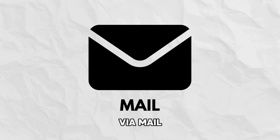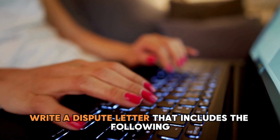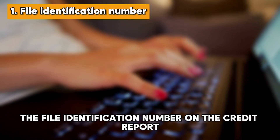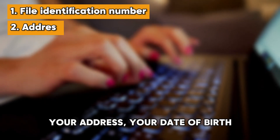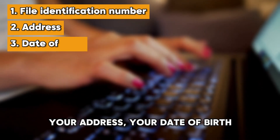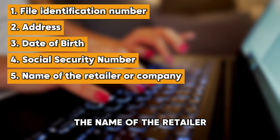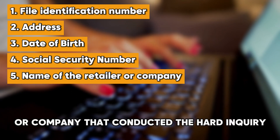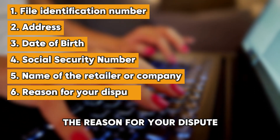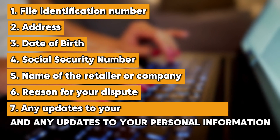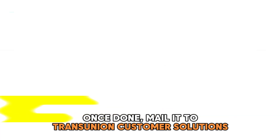Via mail: write a dispute letter that includes the following — the file identification number on the credit report, your address, your date of birth, your social security number, the name of the retailer or company that conducted the hard inquiry, the reason for your dispute, and any updates to your personal information.